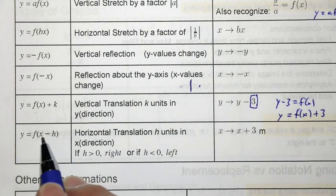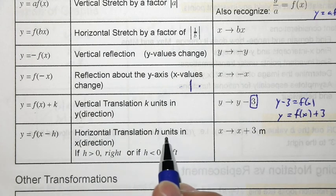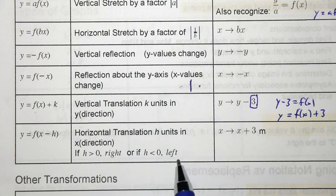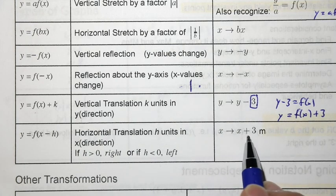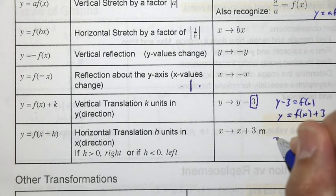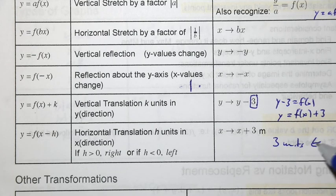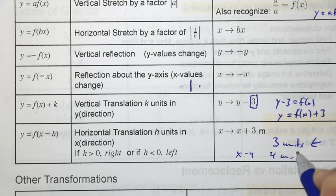If x is replaced with x minus h, this is a horizontal translation of h units in that x direction. If h is positive, then it moves to the right. If h is negative, it moves to the left. For example, you can see x is replaced with x plus 3. This is 3 units to the left. x minus 4 would be 4 units to the right.